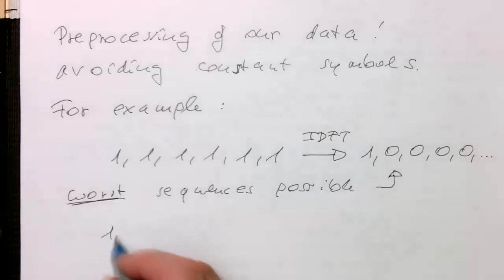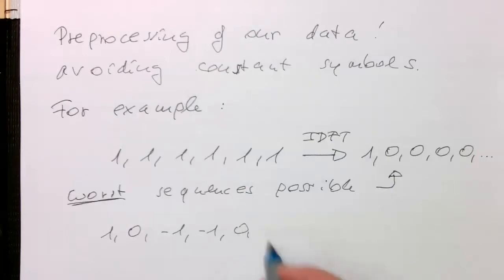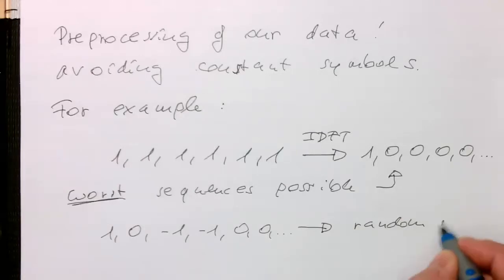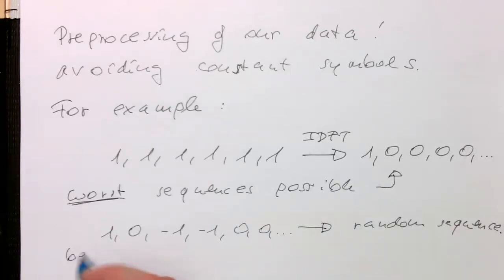So let's say this is just zero, zero, one, minus one, minus one, zero, zero, and so on. And this would obviously also give here some random sequence. And that's probably the best possible sequence.